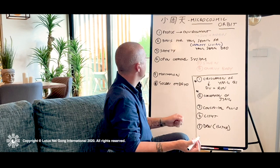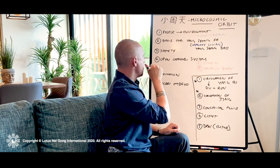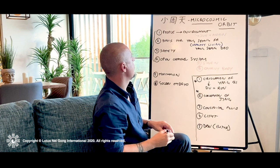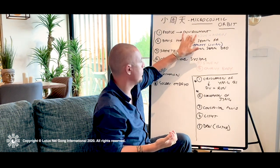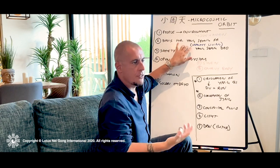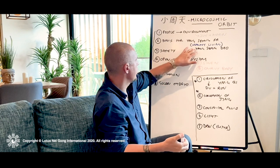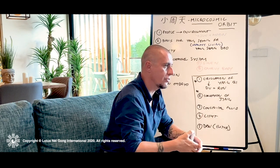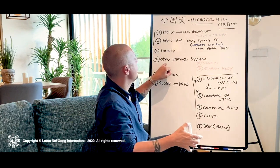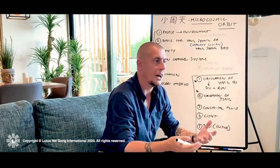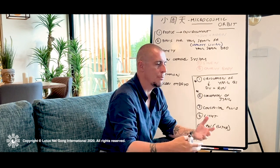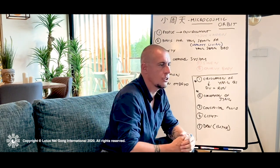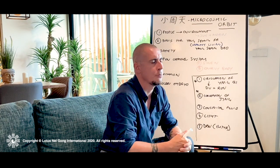With regards to which rationale for the microcosmic orbit I'm going to focus on in this training, it's actually going to be stages one through four. I'll primarily look at the understanding of the MCO in relation to the environment, how it becomes a basis for your health, for regulating yang-sheng-fa and yang-sheng-dao within the body. Safety I'll look at as well, then the opening of the channel system — what that means, why you want to do it, how you know when it's happened. Right at the end of the training I'll touch upon meditation and the golden embryo, but just from a theoretical standpoint.